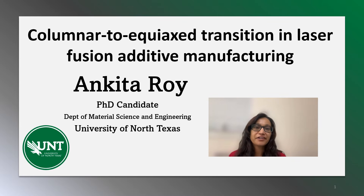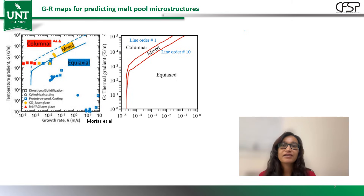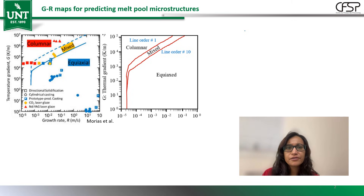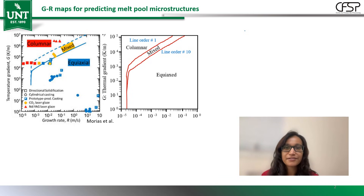In this video we'll be talking about Google Maps but for additive microstructures during solidification. So when I first started studying about solidification, there was this one complicated map that everyone revered — the GR map, also known as the columnar to equiaxed transition map.